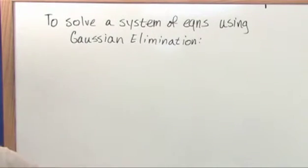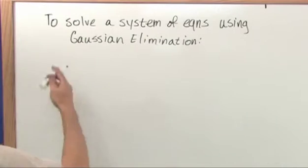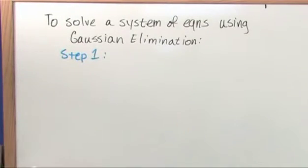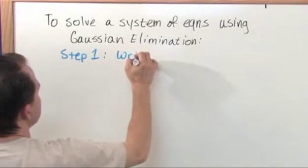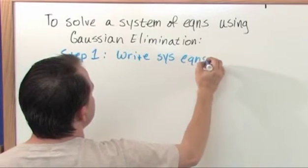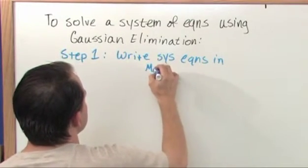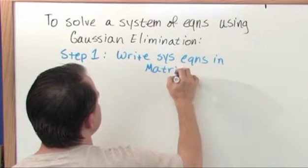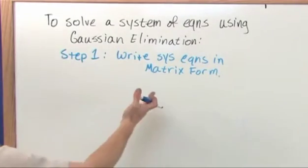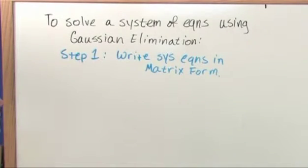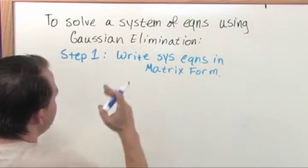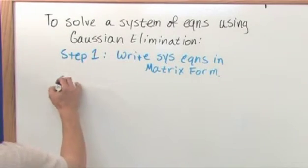Step one. I'm going to write these down in blue just to break it up. Step one: Write the system of equations in matrix form. This is very simple. We've been doing that before. That's just simply taking the system of equations x, y, and z and putting them into a matrix bracket. That's all that is. Just for completeness we put it here.